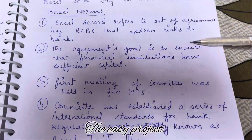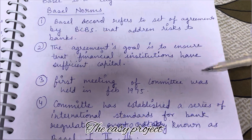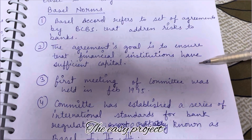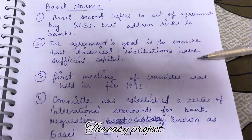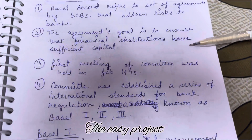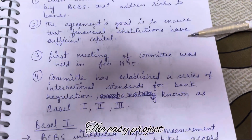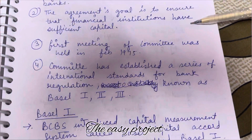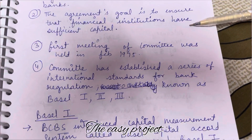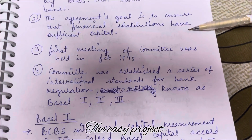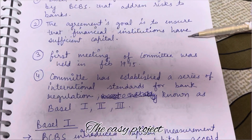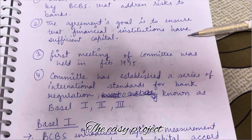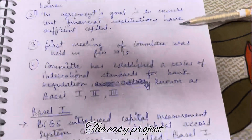This committee's first meeting was in February 1975. Basel Norms' main goal is that they can provide proper capital to the financial institutions and check if they have proper capital or not.